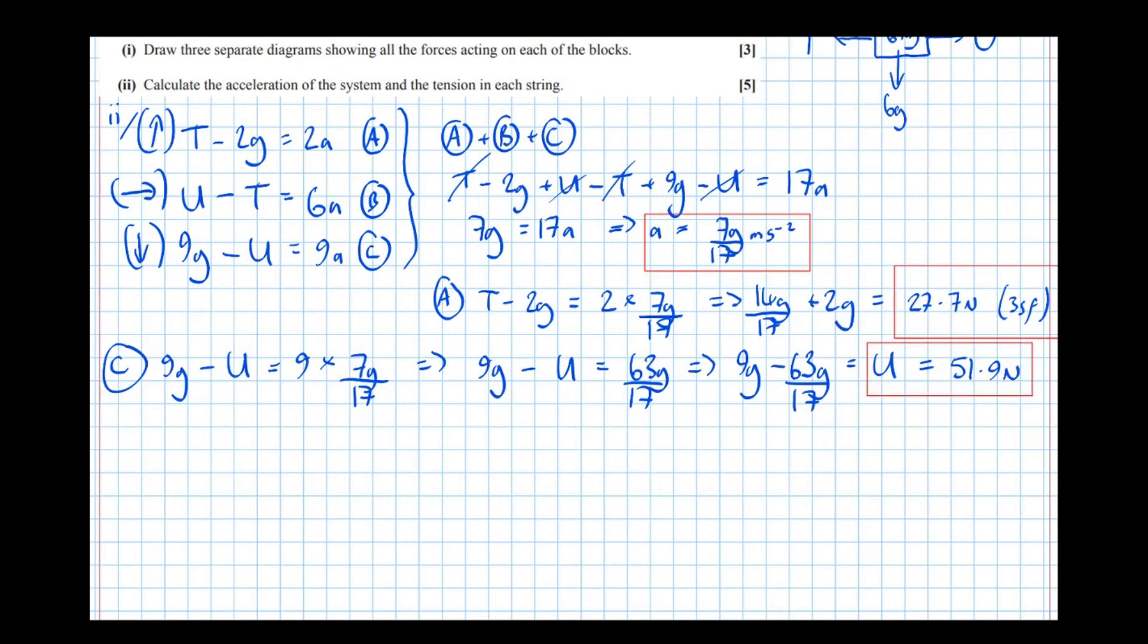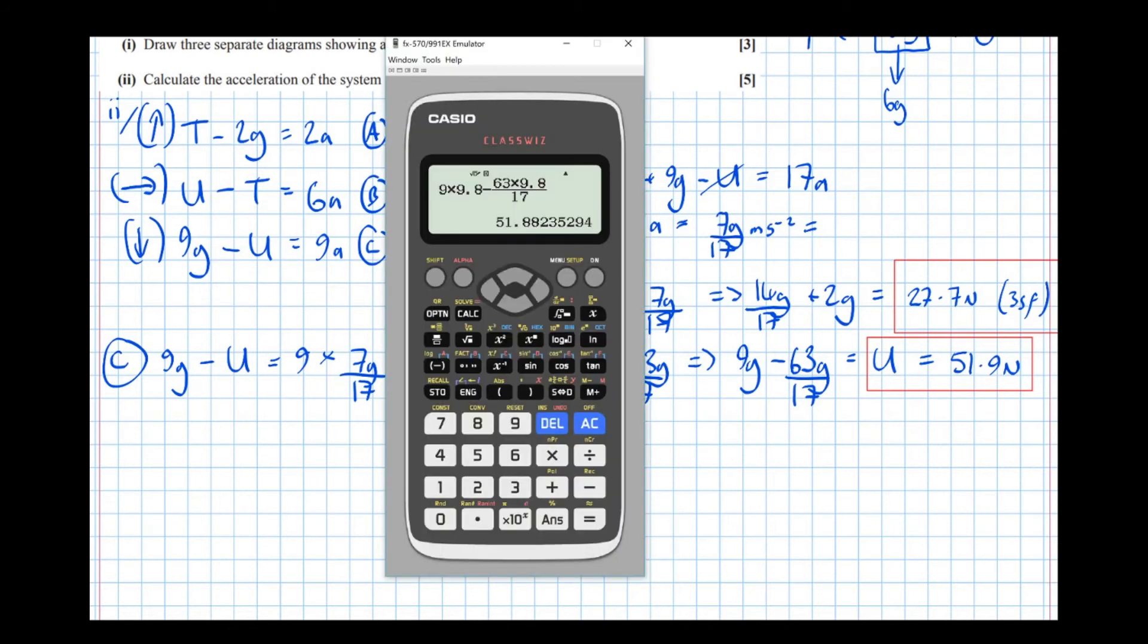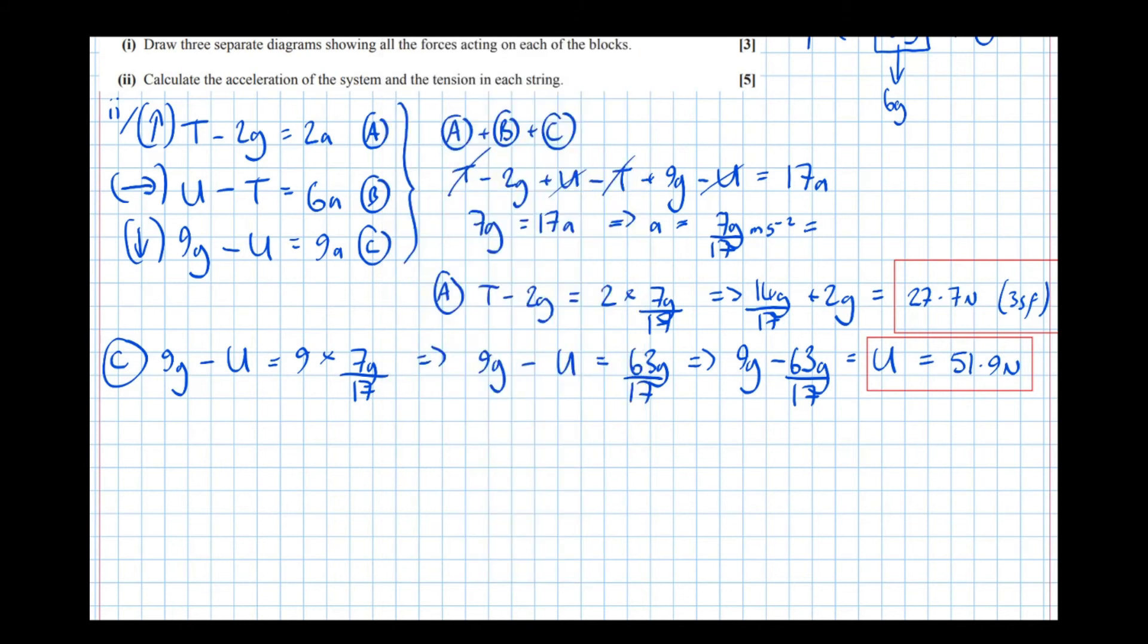There's a small point of modification here. If I wanted to give the acceleration to 3 significant figures, I should go back and calculate that. So 7g, 7 times 9.8 over 17 is 4.04 newtons.